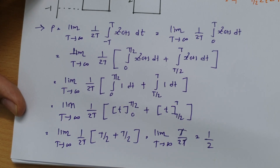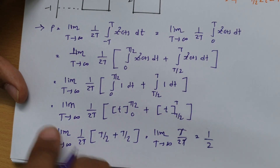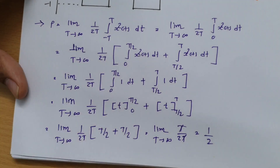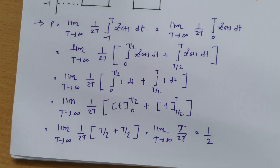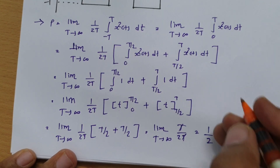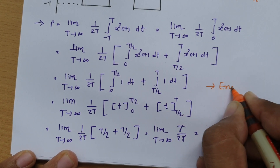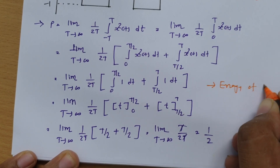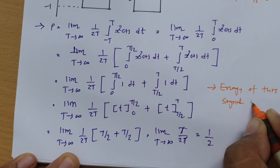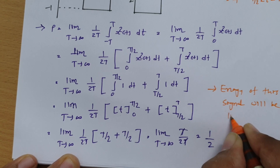The power of this square wave is 1/2, which is finite. Since power is finite, the energy will be infinite. So the energy of this signal is infinite.